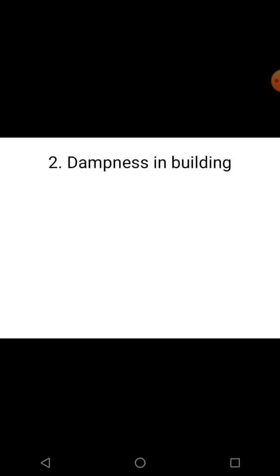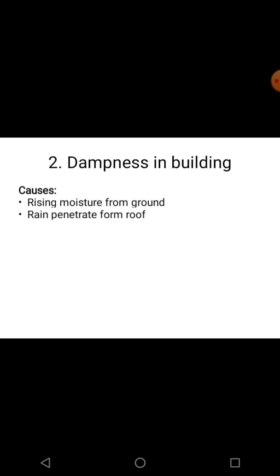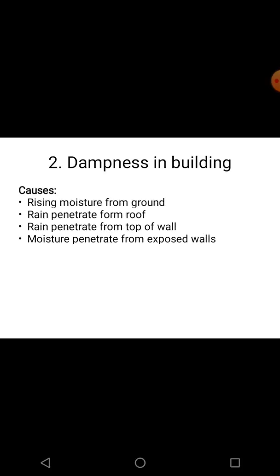The second type of defect is dampness in the building. The causes of dampness are: first, rising moisture from the ground entering the building; second, rain penetrating from the roof; third, rain penetrating from the top of the wall; and fourth, moisture penetrating from exposed walls.